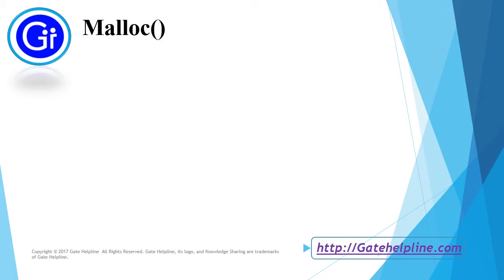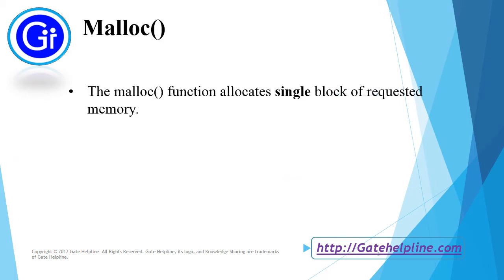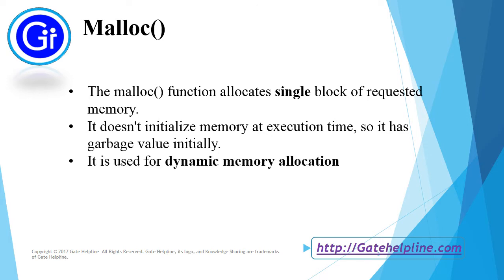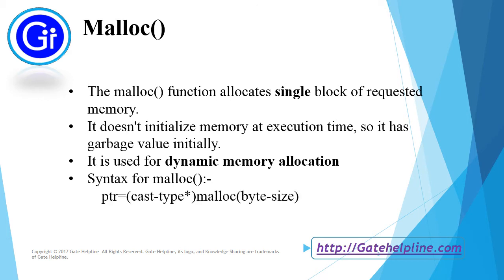First we will see the malloc function. The malloc function allocates a single block of requested memory. It doesn't initialize memory at execution time, so it has a garbage value initially. It is used for dynamic memory allocation. The syntax for the malloc function is: ptr = (cast type*) malloc(byte_size), and it takes one parameter, that is byte size.